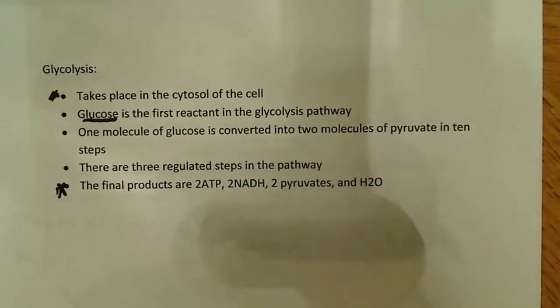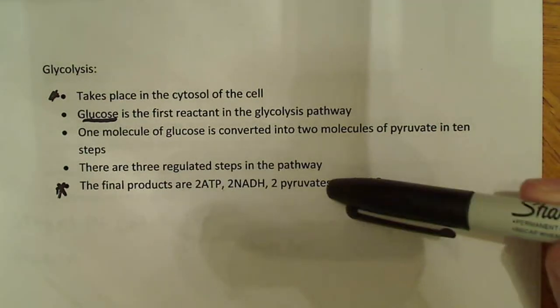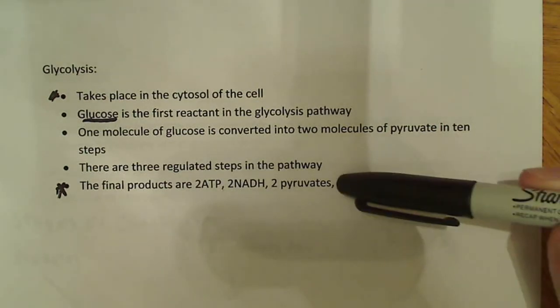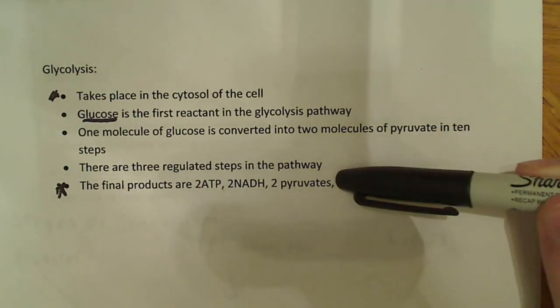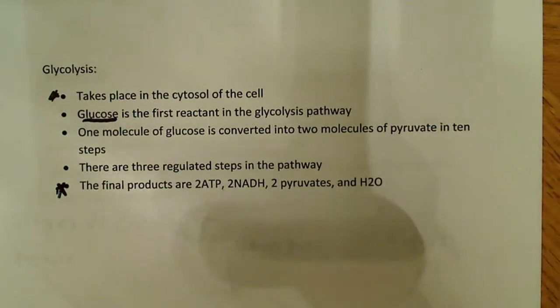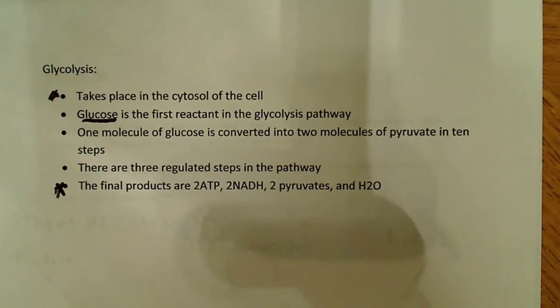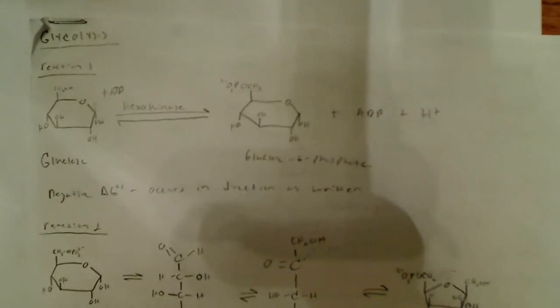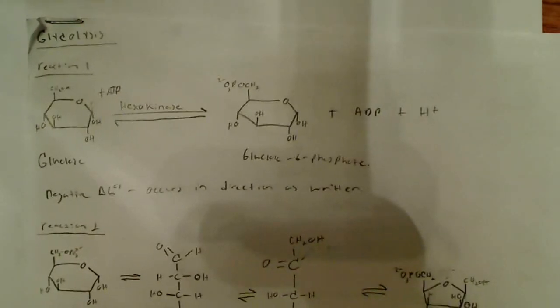It's a net of 2 ATP energy right off the bat, and 2 pyruvates are important too because those end up getting converted to acetyl-CoA. Now here are my drawings of the glycolysis pathway.